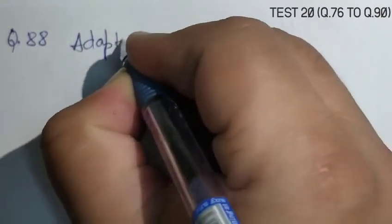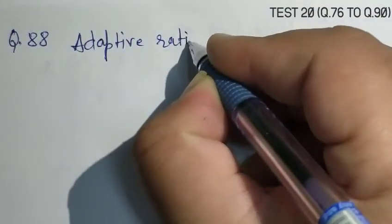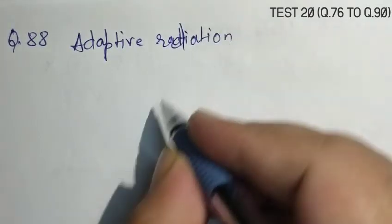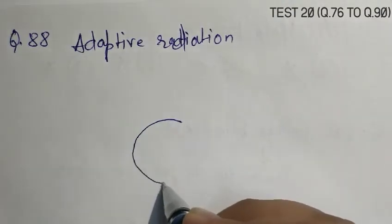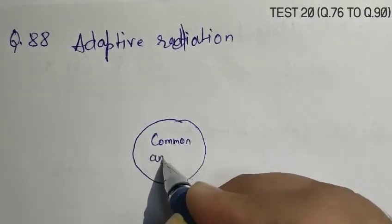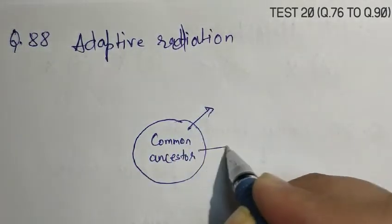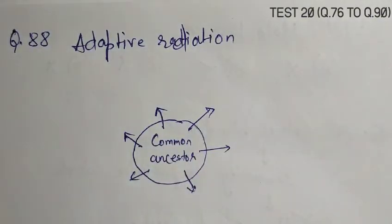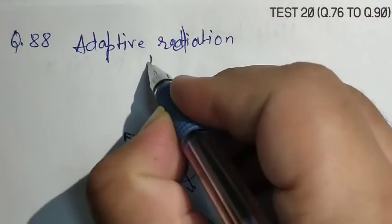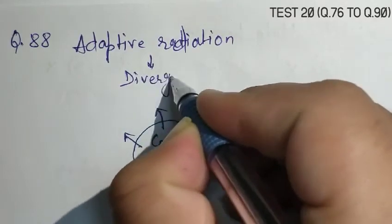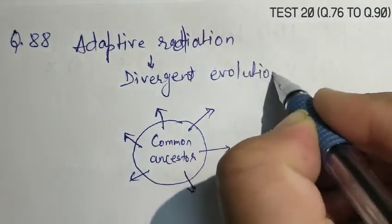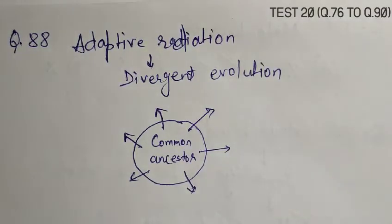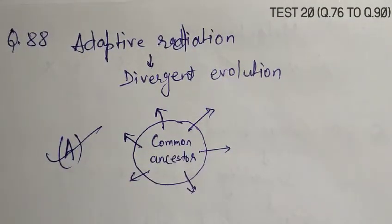Question number 88. Adaptive radiation refers to. Adaptive radiation refers to when the organisms with common ancestors move to different habitat and adapt according to the habitat. This process is known as adaptive radiation. Adaptive radiation leads to divergent evolution. So, the correct answer is A. Evolution of different species from a common ancestor.